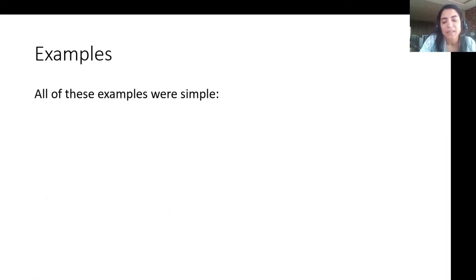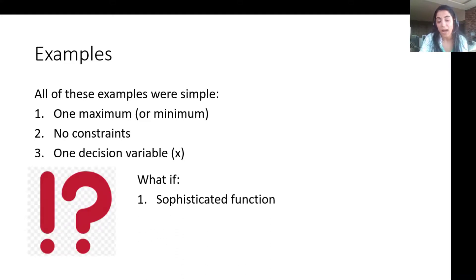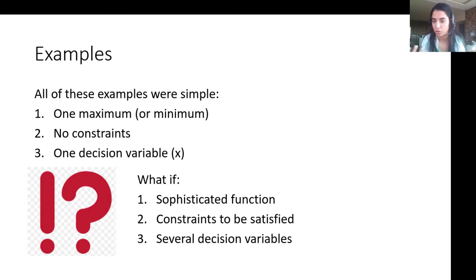Now all of these examples were simple because in fact I only have one maximum or one minimum for a function that is represented graphically. I don't have any constraints and I only have one decision variable that is your x. What if I have a more sophisticated function that I have a certain number of constraints to be satisfied and I have several decision variables like x1, x2, etc.? What should I do?